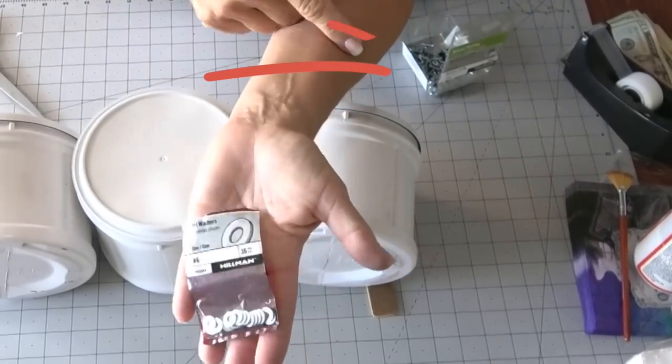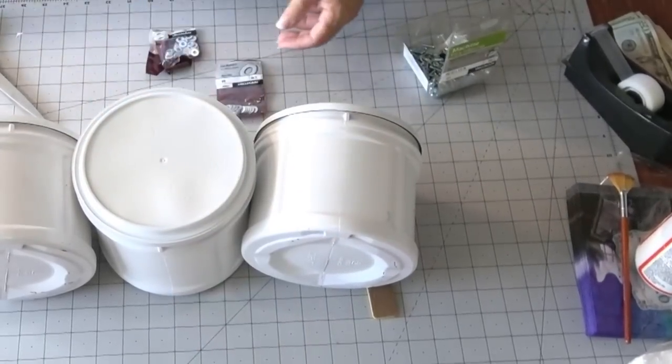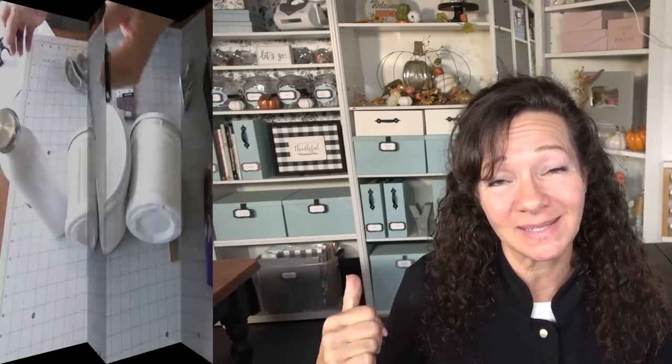I had these on hand already because I've been using them to put handles on all of my boxes and bins because I just love that look. But I think I spent at the time under $3 to get a bag of 100 washers, nuts, and bolts, and they have been lasting for quite a while because I've used them so many times.